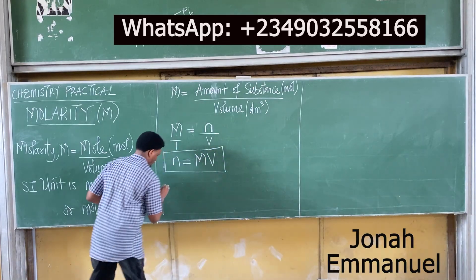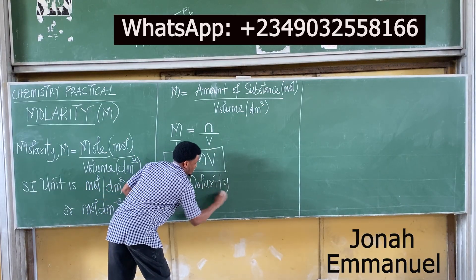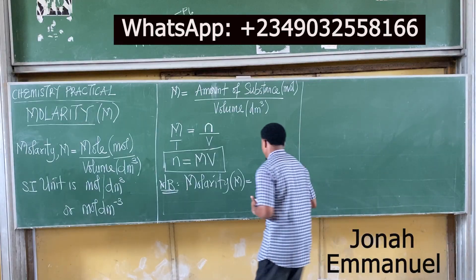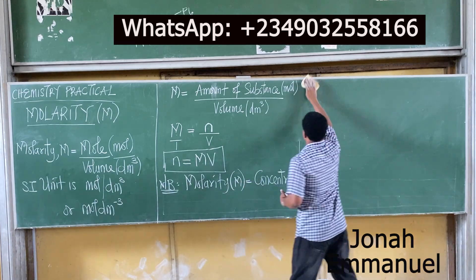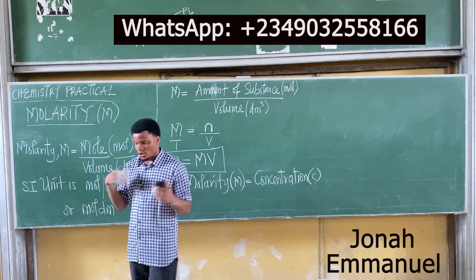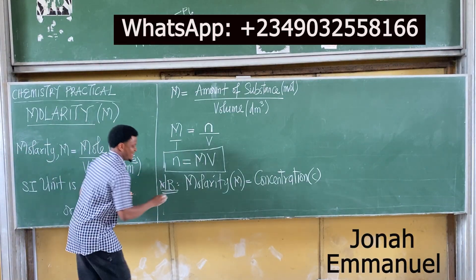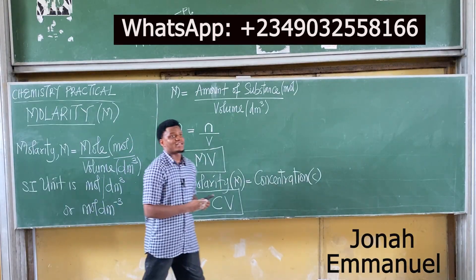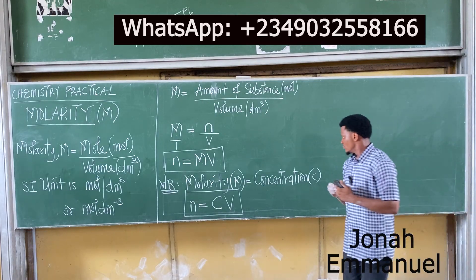Note: molarity is often called concentration, represented by C. It depends on your author or the context — whether it says molarity or concentration, it is the same thing. That means N can also be written as C times V.